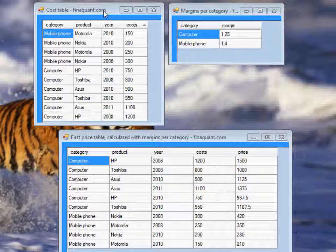This is the cost table as the first input parameter. Costs are given per attributes category, product, and year. In the first example, margins are specified per category only.